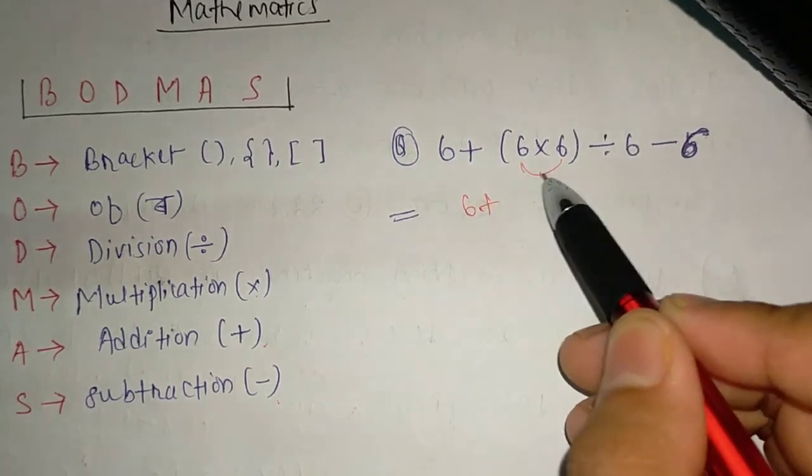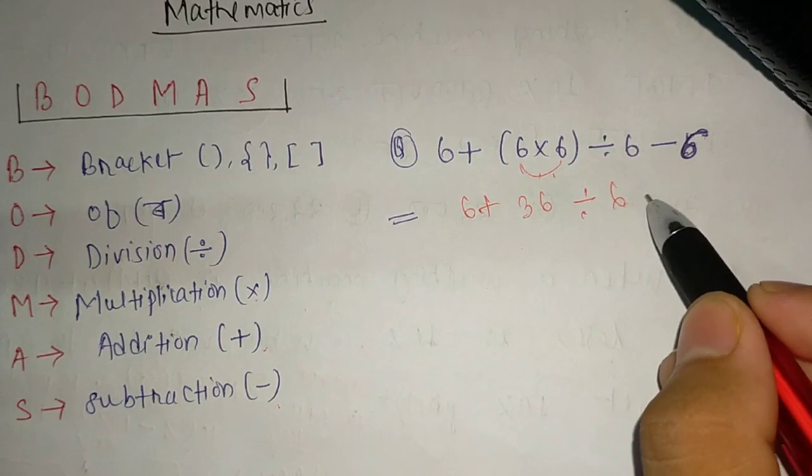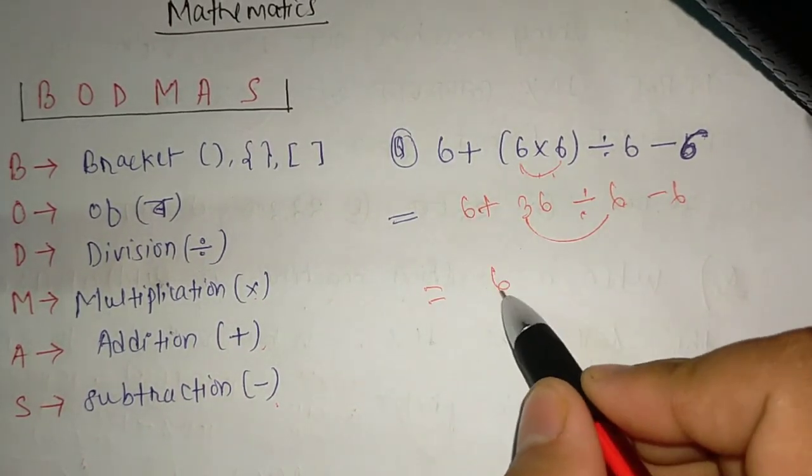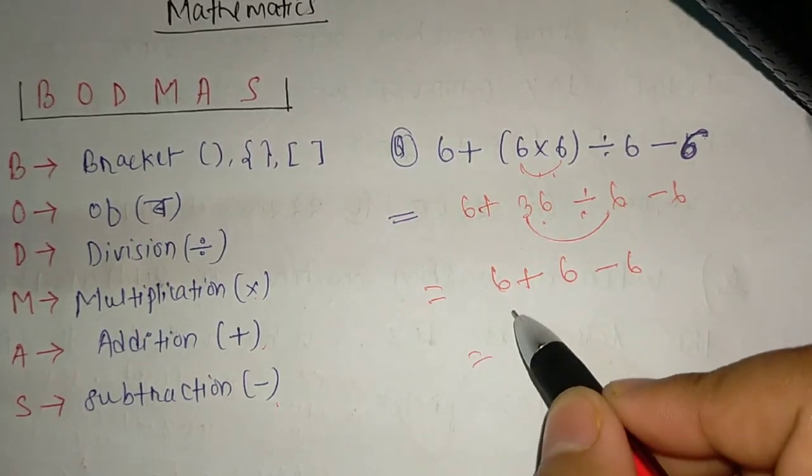In order to solve the bracket in the problem, 6 times 6 is 36. Then 36 divide by 6 minus 6. We solve the problem: 36 minus 6 equals 5.